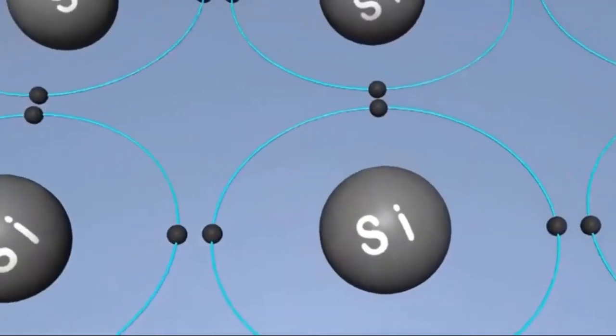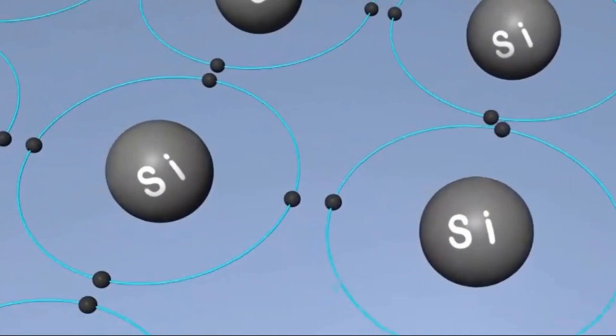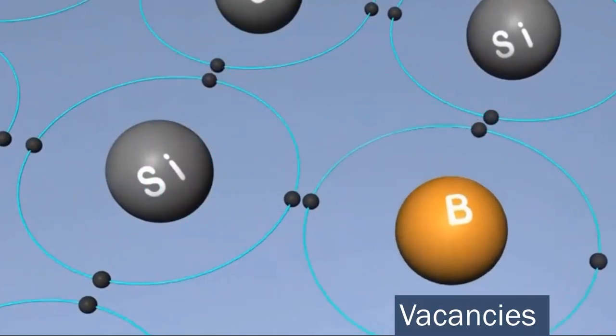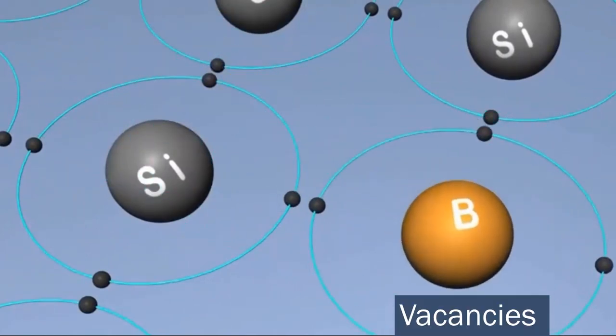For the P-type layer, atoms like phosphorus have one more electron than silicon. When boron atoms replace some silicon atoms in the crystal lattice, holes are created where electrons are missing. These holes carry a positive charge, forming the P-type layer.